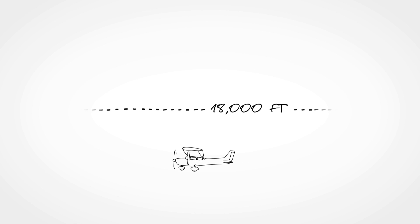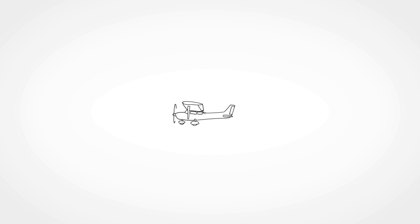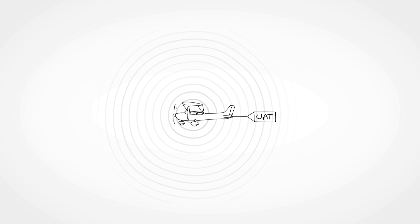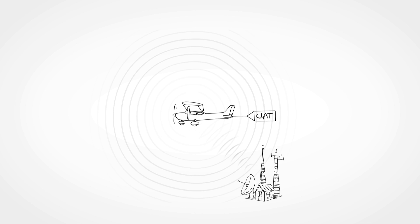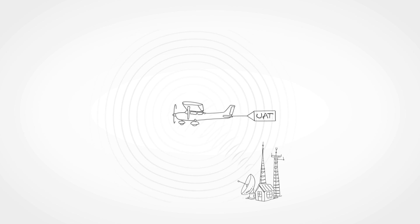If you fly at lower altitudes and only within the U.S., you can keep your existing Mode-C or Mode-S transponder and install a Universal Access Transceiver, or UAT, to complement it. The UAT path uses the 978 MHz frequency and allows for two-way communication. You can send your ADS-B out position information while simultaneously receiving data link traffic and subscription-free weather.